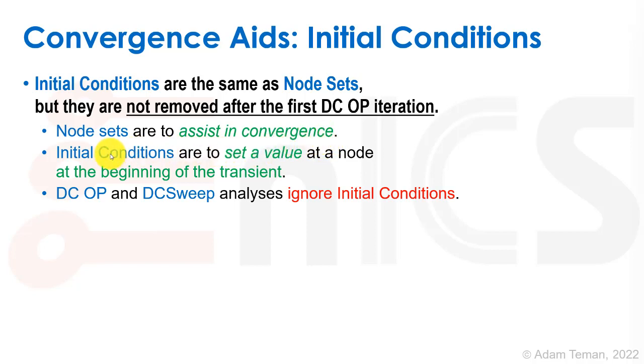Initial condition is different. It's saying, listen, really, at time zero, you have this voltage on this node or this current through this device. So it's to set a value to node at the beginning of the transient, and it is not removed. Thereafter, it's not removed for our convergence. It's the real value that should be there. It's an input to our circuit.